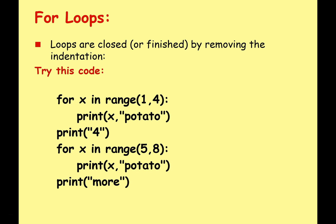Loops are closed or finished by removing the indentation. So have a look at this program here. When I run it we've got two for loops. What's going to happen? Well, for x in range 1 to 4 print x potato, it's going to print 1 potato, 2 potato, 3 potato, and then it's going to stop because it'll stop when it gets to 4. 1 potato, 2 potato, 3 potato, and then it's going to print 4.